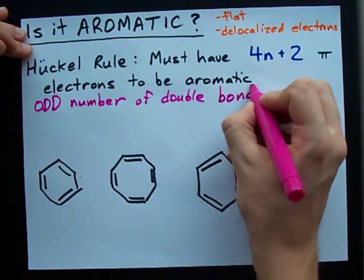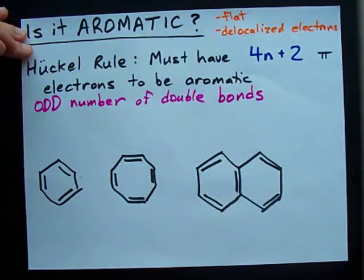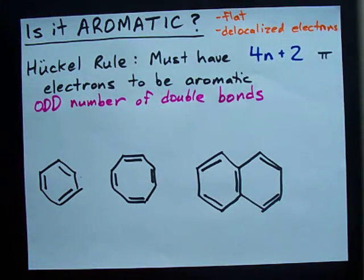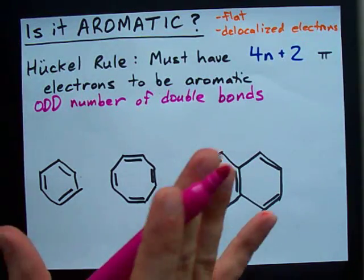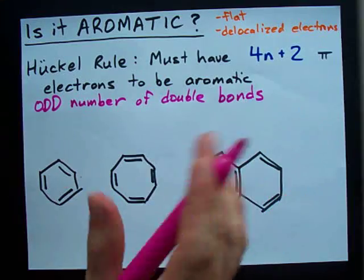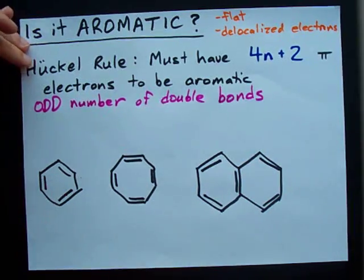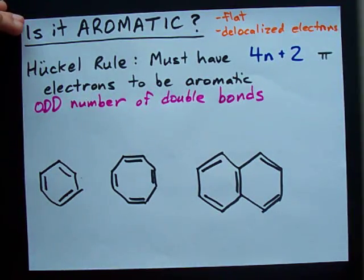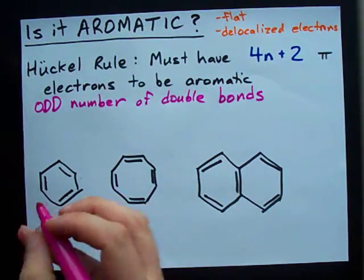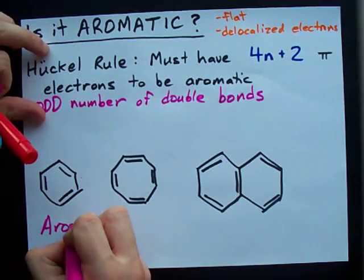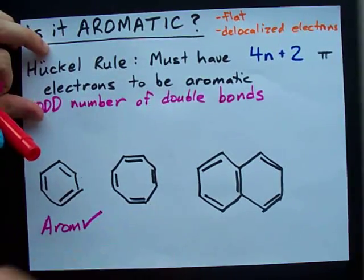This here is benzene — it's like the token aromatic molecule. Let's see if it's aromatic. One, two, three double bonds. That's odd. Aromatic. Check.